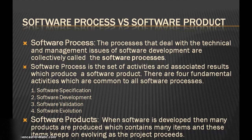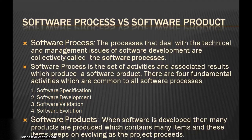The development process specifies all the engineering activities that need to be performed, whereas the management process specifies how to plan and control these activities so that cost, schedule, quality and other objectives are met. When software is developed, many products are produced, which contain many items, and these items keep on evolving as the project proceeds.